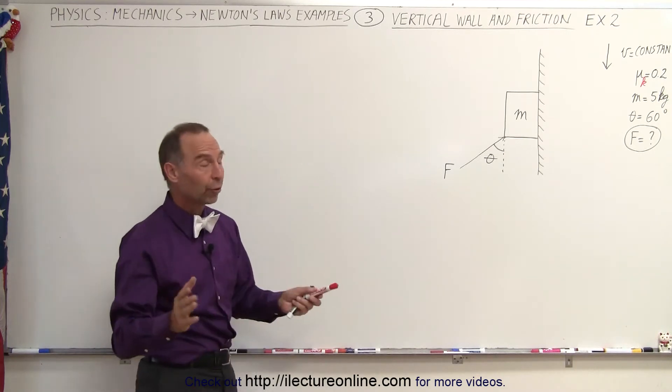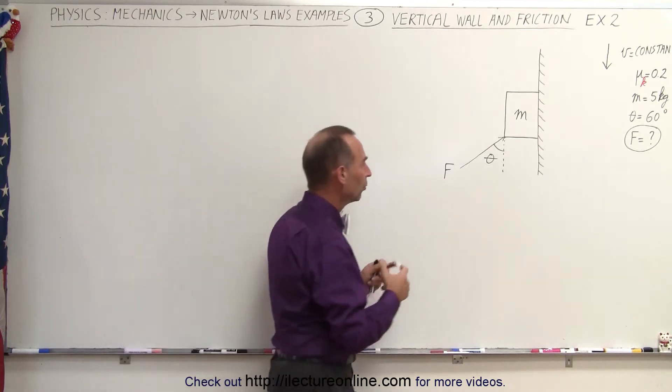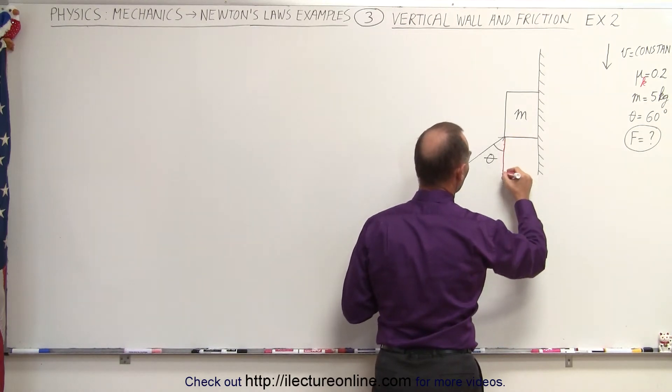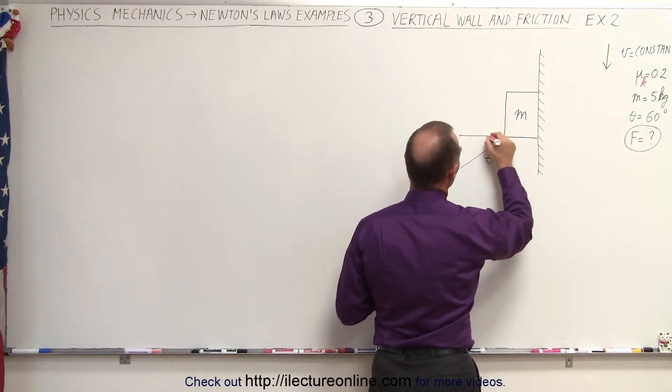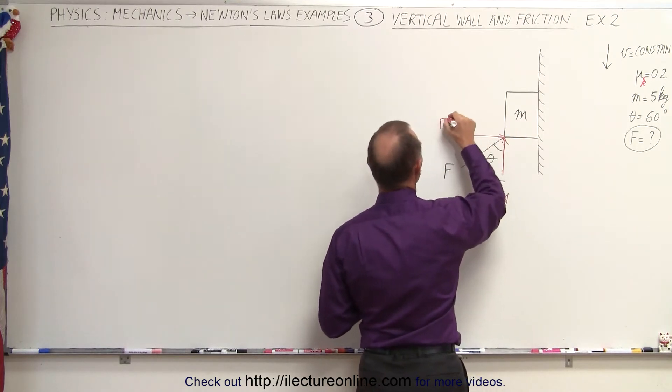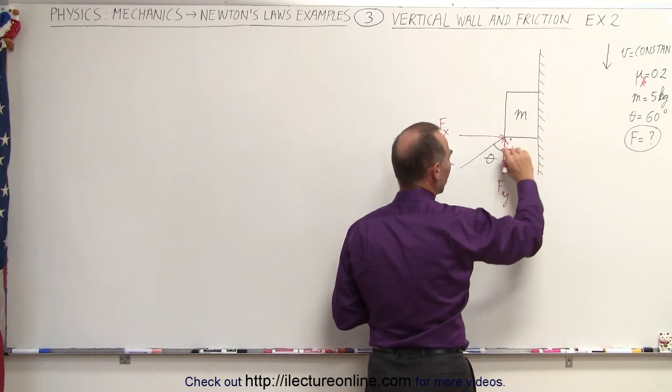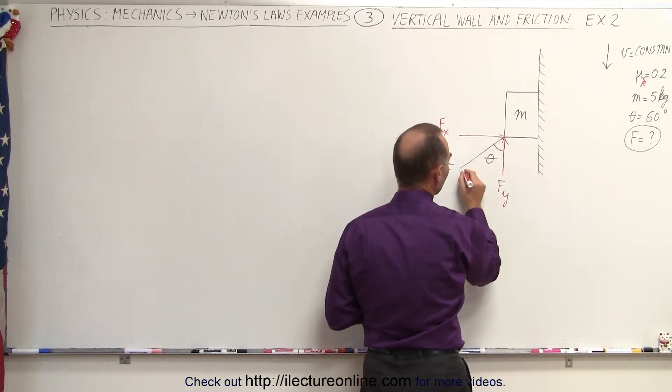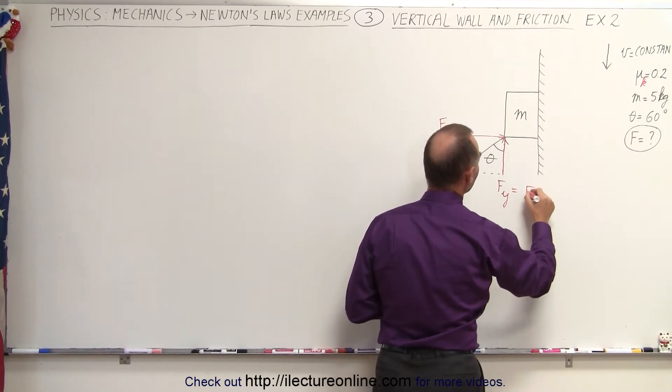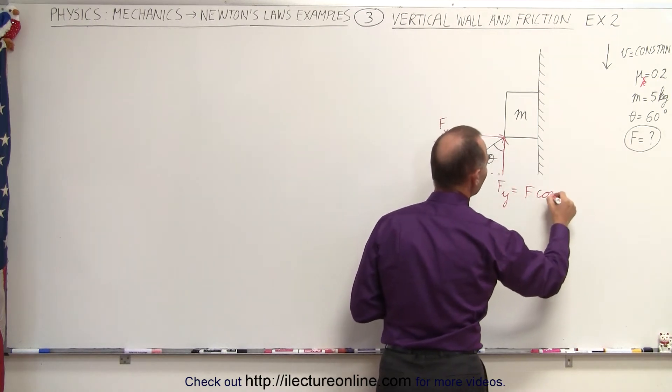So let's start out by identifying all the forces acting on the block. First, we're going to take this force and divide it into the vertical and horizontal components. Like this. So we have the force in the y direction, the force in the x direction. And notice since this component is adjacent to the angle, if we make this into a triangle, we can see that this is going to be equal to f times the cosine of the angle theta.